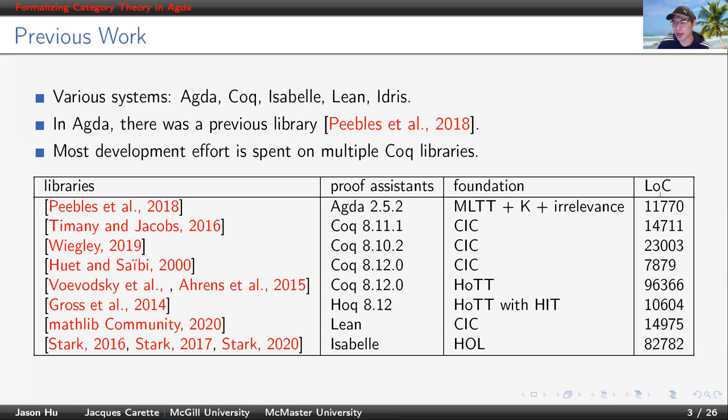In terms of scale in lines of code, many libraries are under 15,000 lines of code, while some are fairly big. For example, this one in Coq using homotopy type theory, and this one in Isabelle, they are close to 100,000 lines of code.